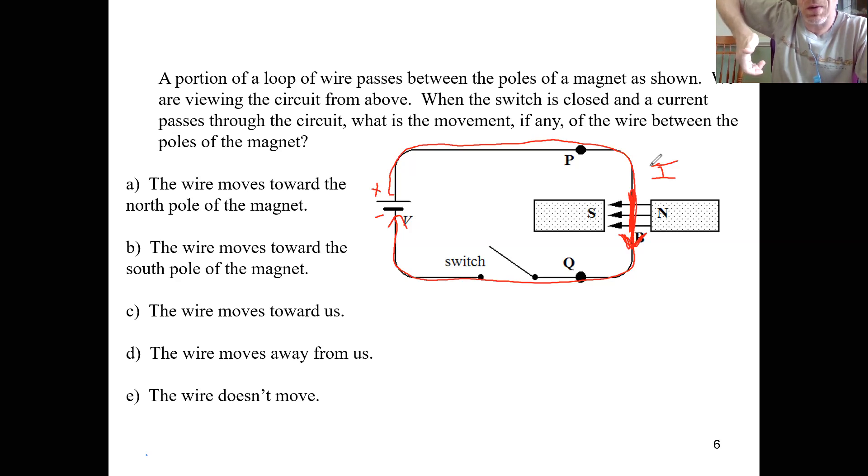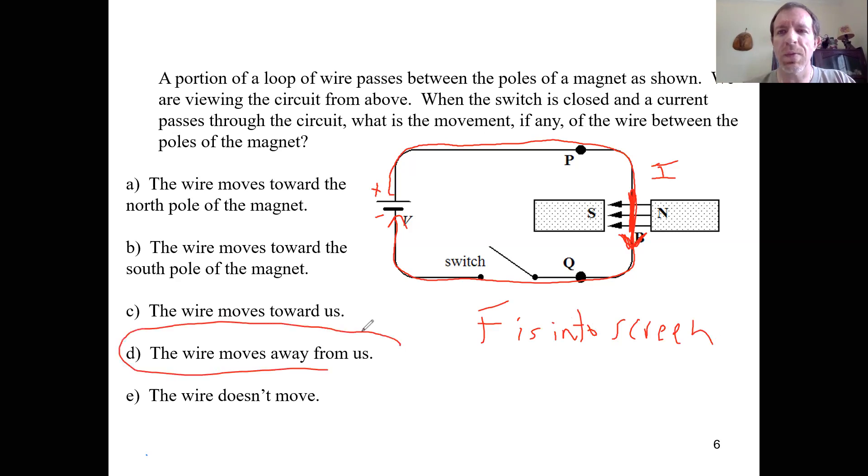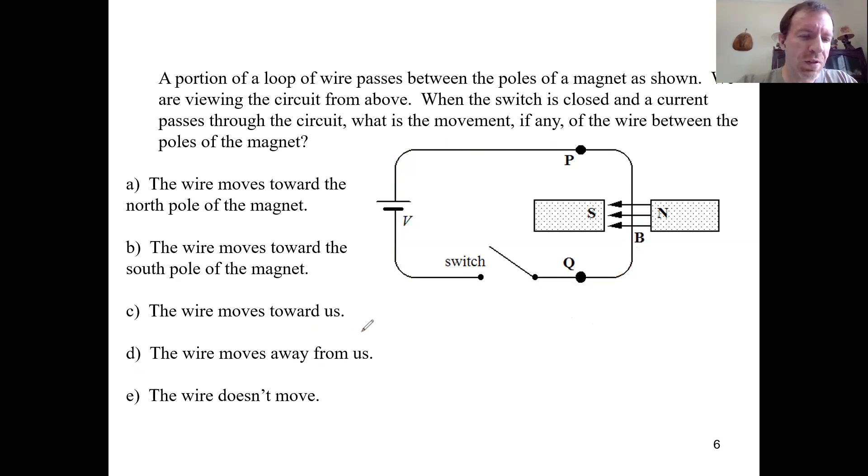But if you do this, your thumb should point towards the screen. So the force here, the force on this piece of wire is into the screen. So the force is into the screen. And if the force is into the screen, that means that, well, the wire is going to move away from us. And just as a check on me here real quick, wire moves away from us. Let me make sure here, whoops, putting little dots, make sure here that I'm right. Yes. The wire moves away from us.